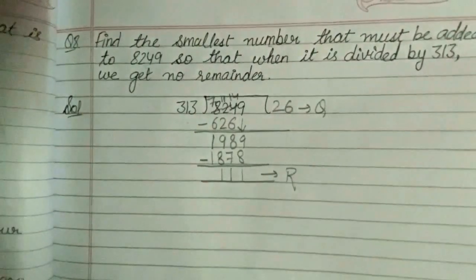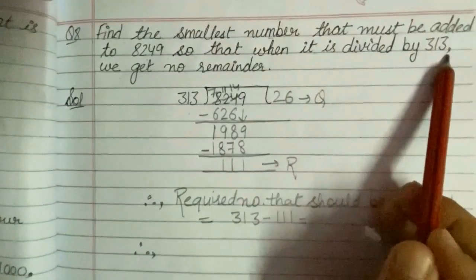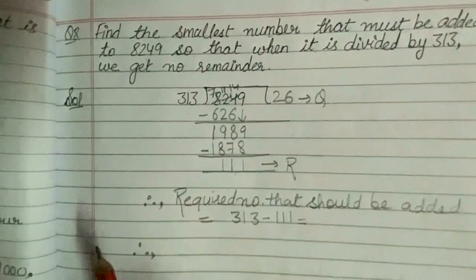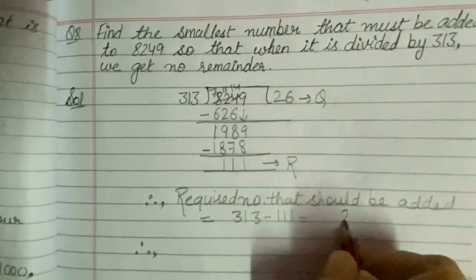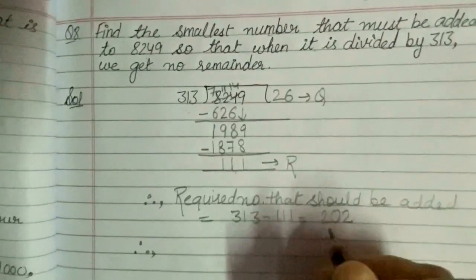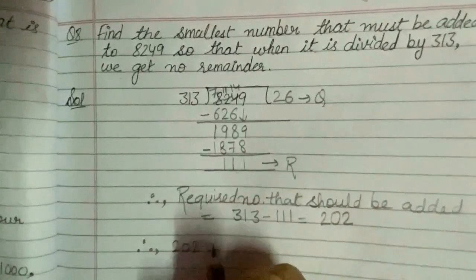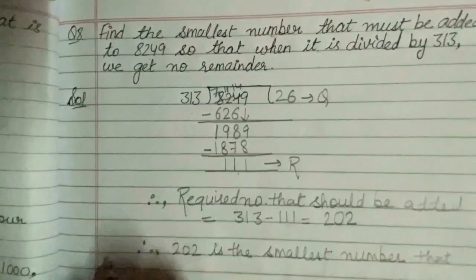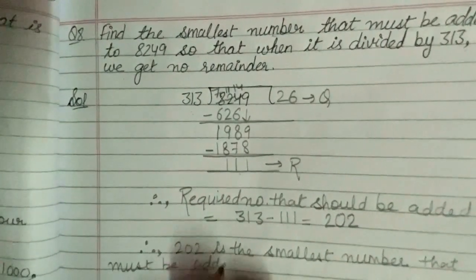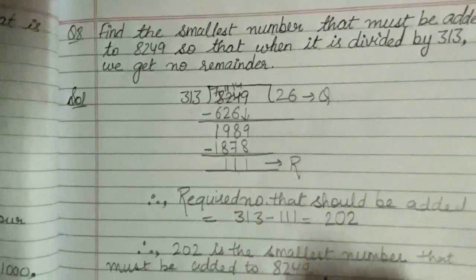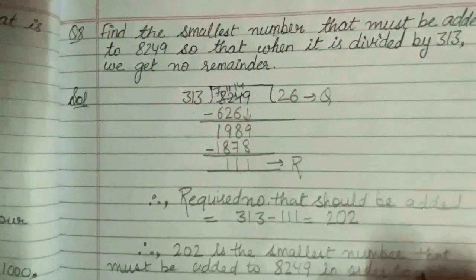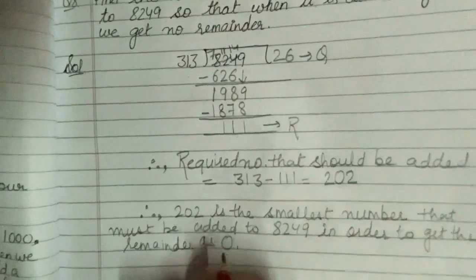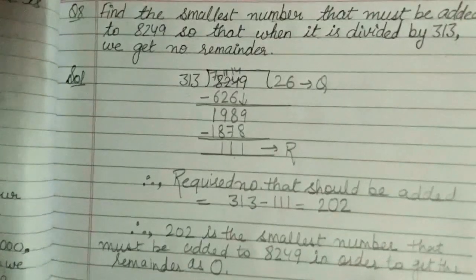So what we will do now? We want to find out the smallest number that must be added. That number will be found by subtracting 111 from 313. On subtracting: 3 minus 1 is 2, 1 minus 1 is 0, 3 minus 1 is 2 — you will get 202. Therefore 202 is the smallest number that must be added to 8,249. Hopefully question number 8 is also clear to you.